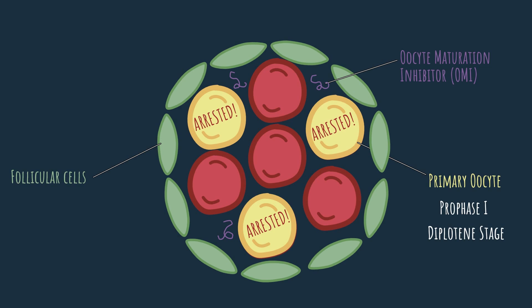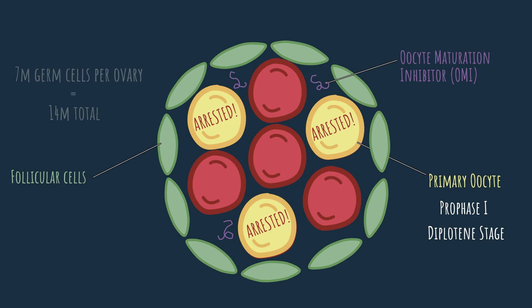So now we know how the primary oocyte is formed: we begin with the primordial germ cell that becomes an oogonium, which enters meiosis to become an arrested primary oocyte. This process goes on until we reach the fifth month of development, at which point it stops — so no more primary oocytes will form past that point. If we counted the oogonia and primary oocytes — or germ cells in other words — found inside the ovary, we would see about seven million germ cells per ovary, or 14 million germ cells in total. That's a pretty big number, but it's going to decrease rather rapidly from now on.